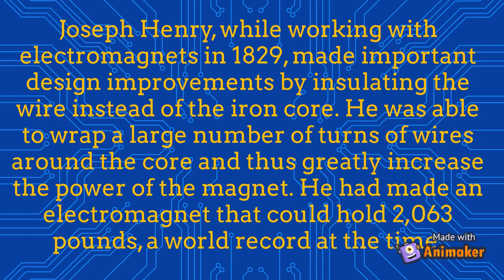Joseph Henry, while working with electromagnets in 1829, made important design improvements by insulating the wire instead of the iron core. He was able to wrap a large number of turns of wire around the core, greatly increasing the power of the magnet. He made an electromagnet that could hold 2,063 pounds — a world record at the time.